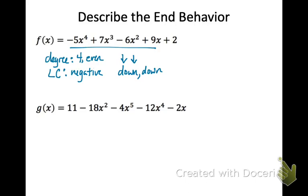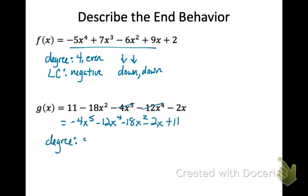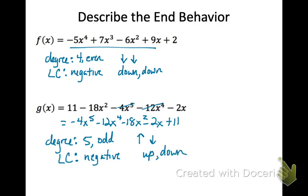Looking at the G function, notice it's not in standard form, so we need to rewrite it in standard form. The first term gives us a degree of 5, which is odd, and the leading coefficient is negative 4. Since the degree is odd, the end behavior will be opposite. Since the leading coefficient is negative, the end behavior will be up on the left and down on the right — like a negative slope of a line. We describe that as up and down.